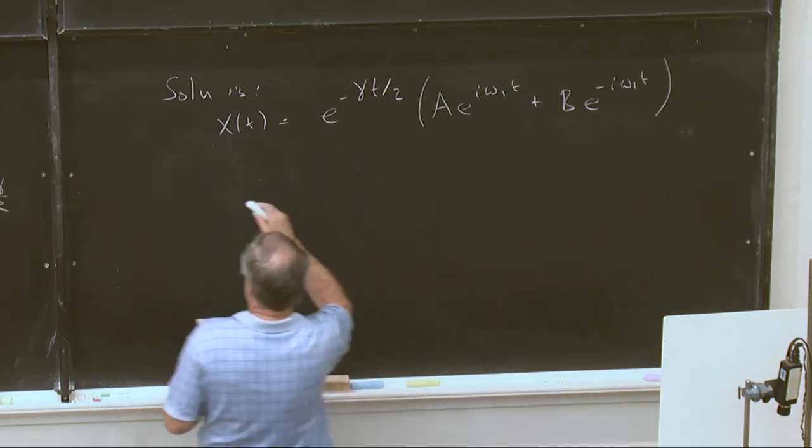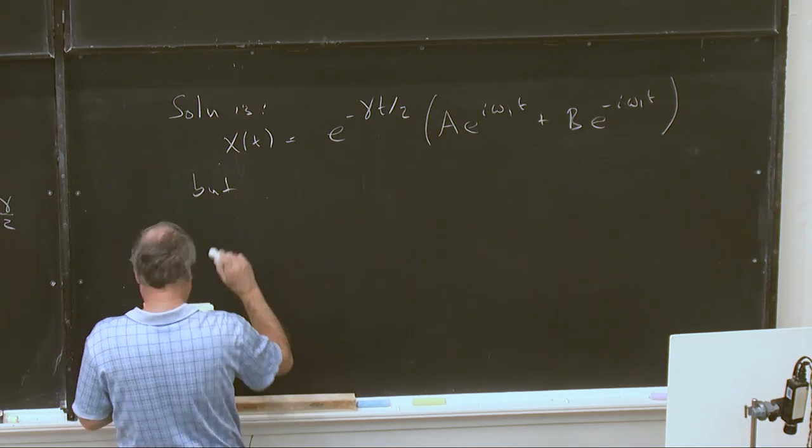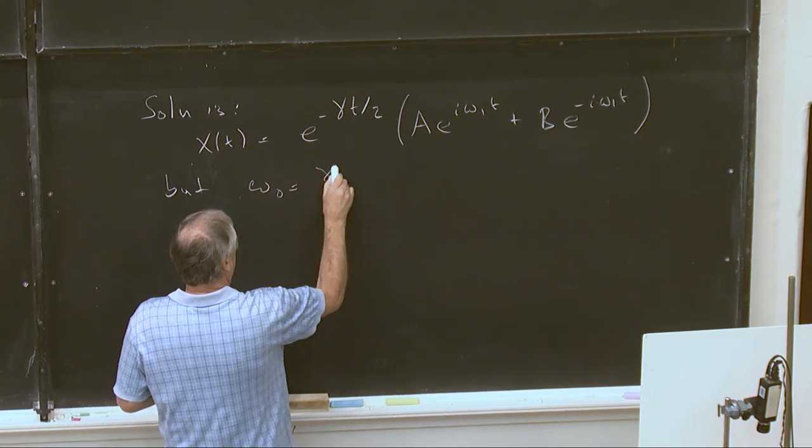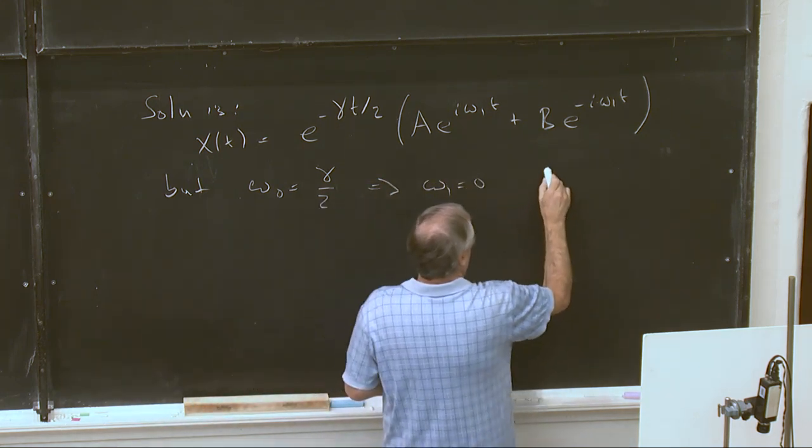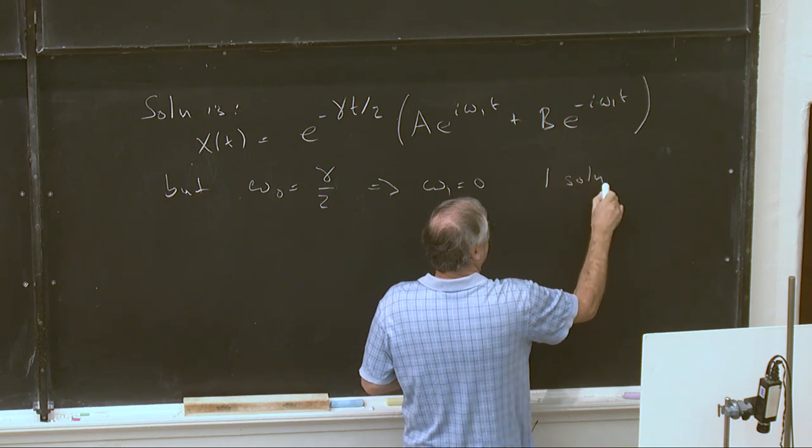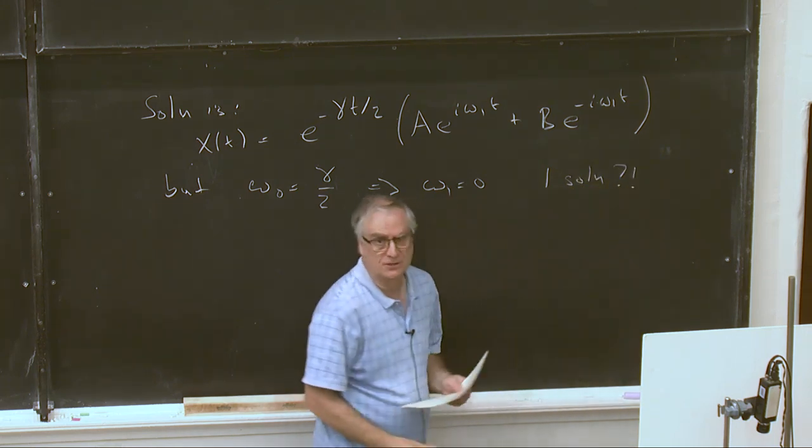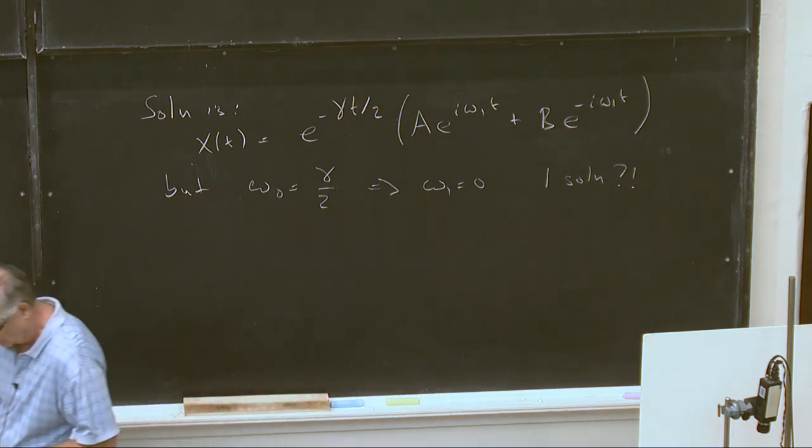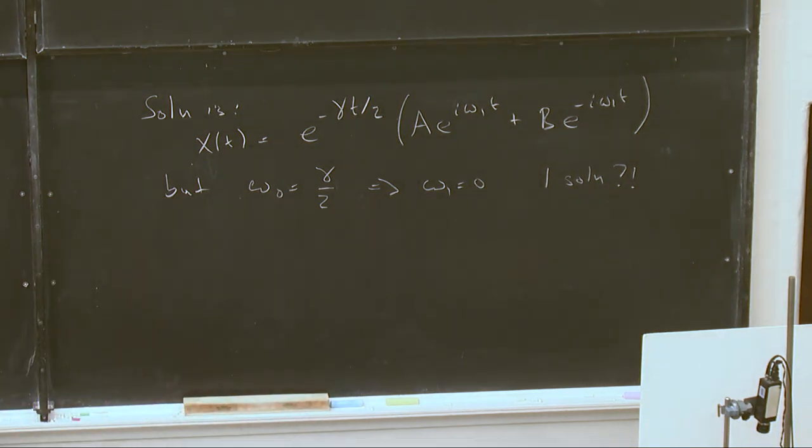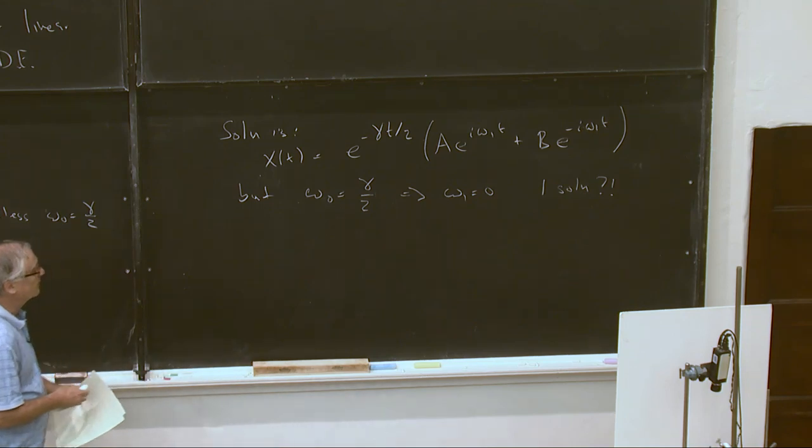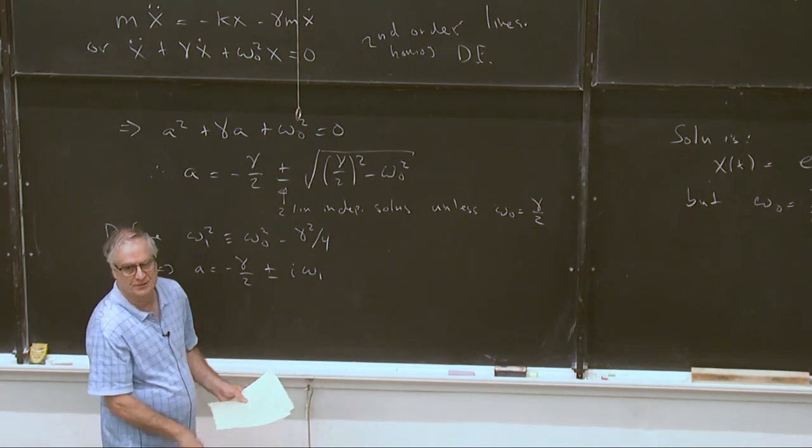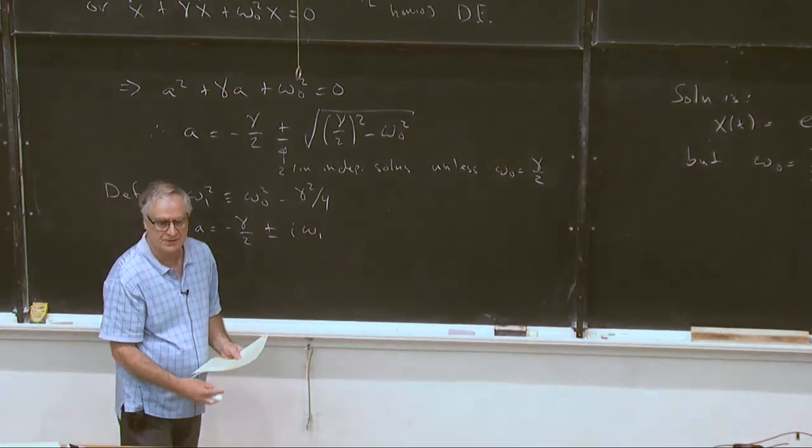Okay, but we do have this case that we've got to worry about. Omega naught equals gamma over 2 implies omega 1 equals 0. One solution. We just lost the solution. We lost the degree of freedom in our solution space. So what do we do? Well, it means that something we did here doesn't cover this case quite right. So we have to go back to the differential equation for this case and see what happens.